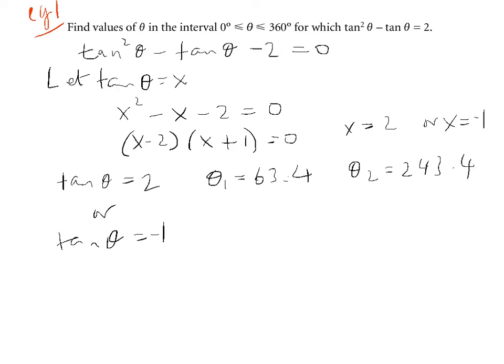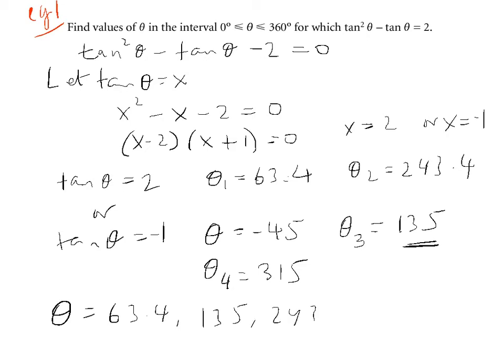With tan theta equals minus 1, our theta equals minus 45. That's what we get in the calculator, but we also know that minus 45 is outside our range. And so we can add 180 to this and that will give us our third value which would give us 135. And we can generate another value by adding 180 to this with theta 3, and that should give us 315. So therefore, our theta equals 63.4 or 135 or 243.4 and finally 315.